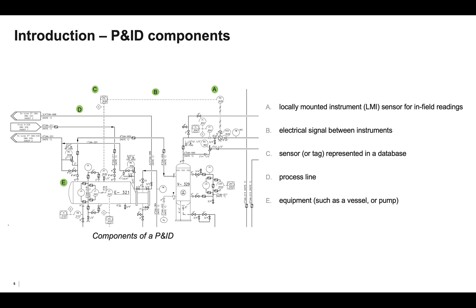A tag is connected to a distributed control system and represented in an operational historian system. Text inside a circle indicates the instrument or sensor type and the unique ID associated with it in the operational historian. The dashed line between an LMI and a tag indicates an electrical signal, and the text adjacent to solid lines, which are process lines, specify the size and material of that process line. The larger shapes depict process equipment, such as a vessel or pump shown next to E, and have larger text that are their unique identifiers.